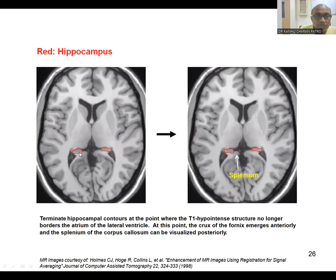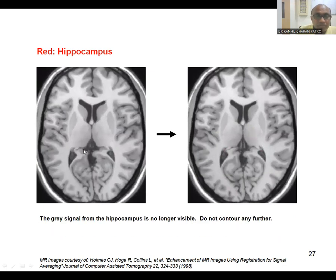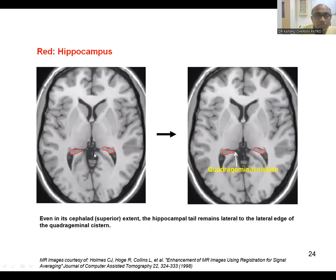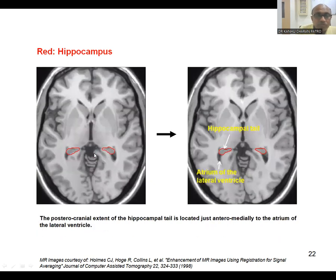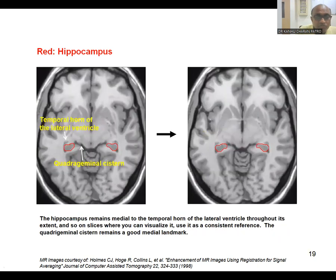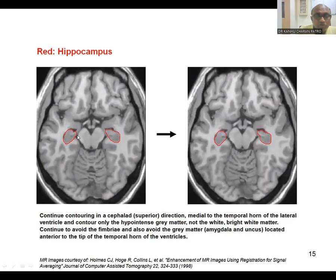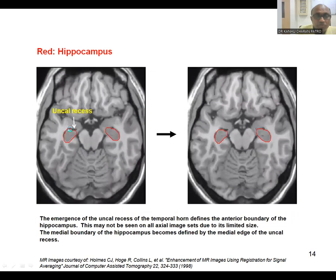When the hypointense area finishes and the fimbria starts, that is where you should stop contouring. Remember: this hypointense area corresponds to the quadrigeminal cistern superiorly. The posteromedial part of the temporal horn should be contoured.